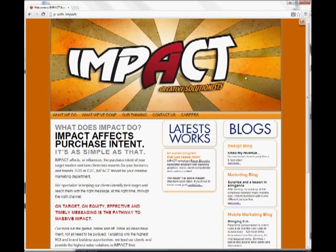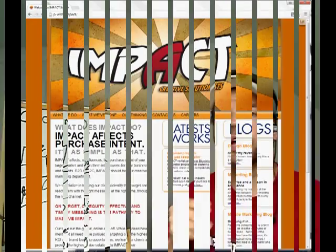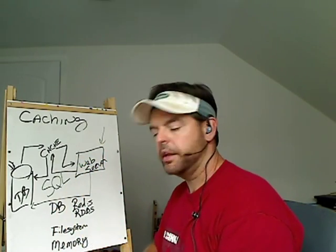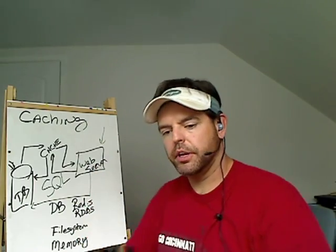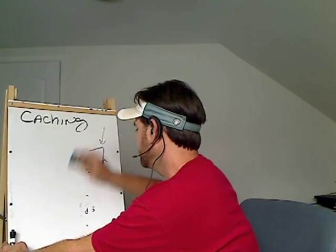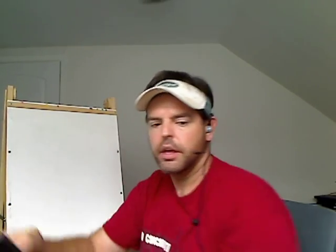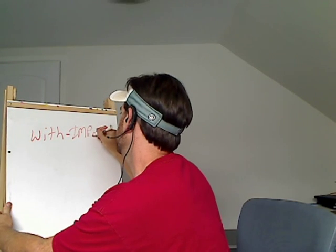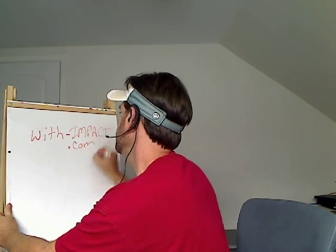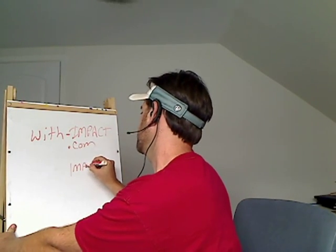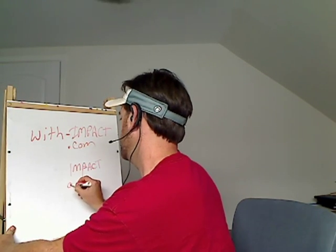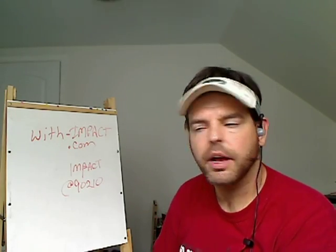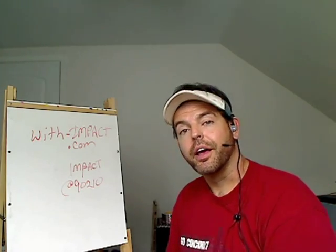That's a practical example of how caching works in Cake 2.4.0. All caching does is pull data locally — it pulls what you need locally in a digest format that allows you to get to it quicker. If you have any questions, hit me with a response below or on our blog. Visit our website at with-impact.com, or text impact to 90210. Thanks a lot — this is Ray, and I hope to see you soon.